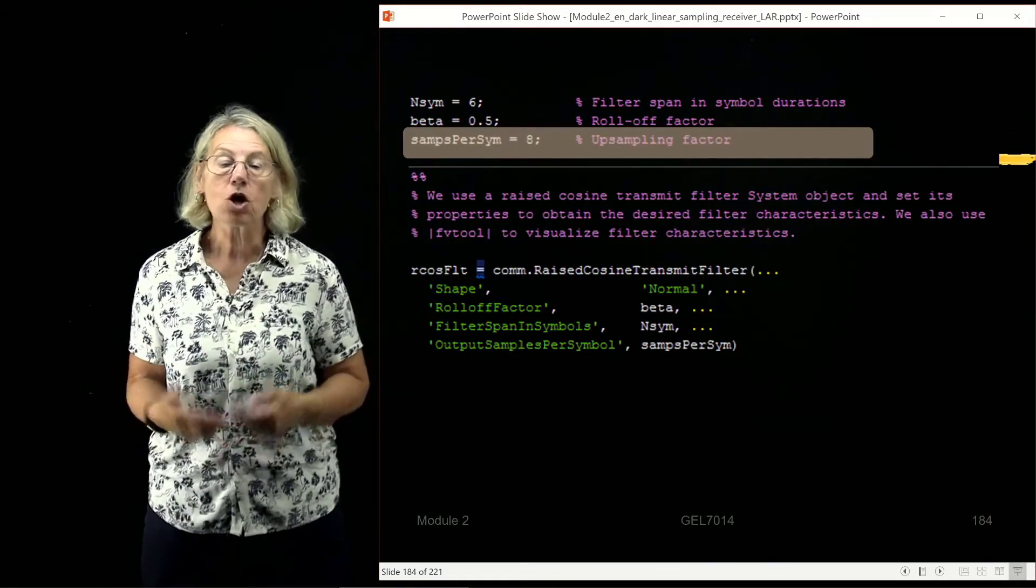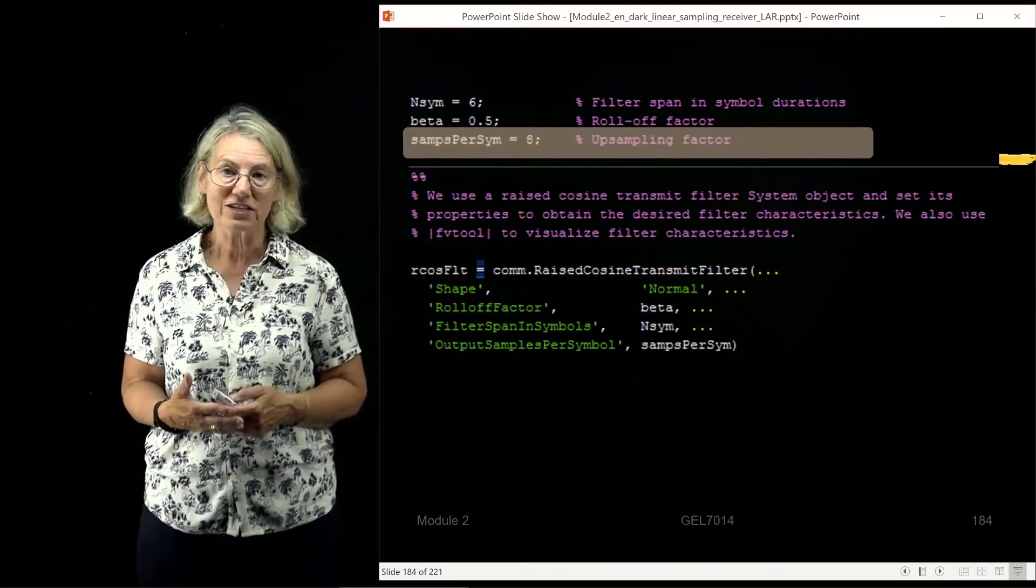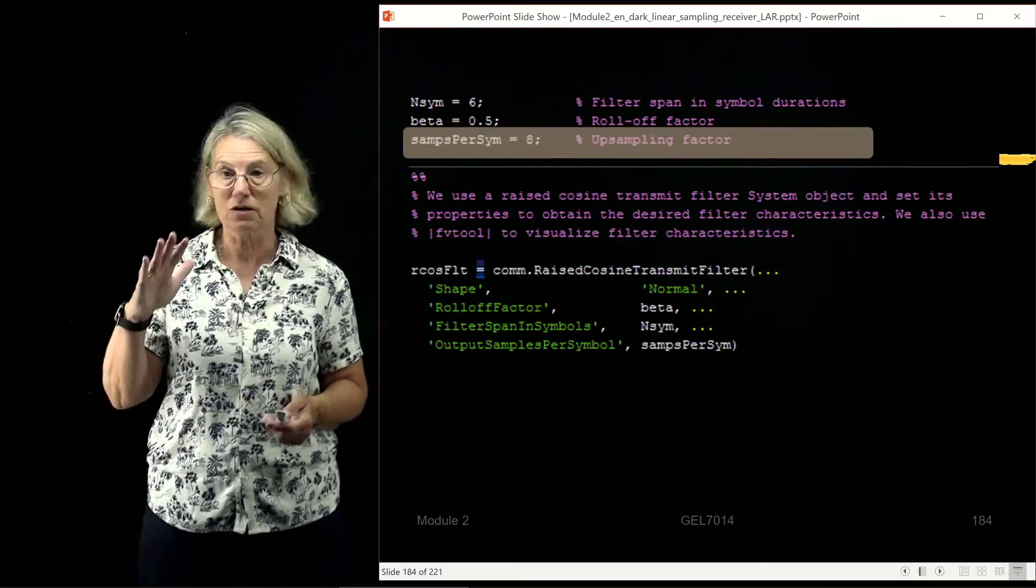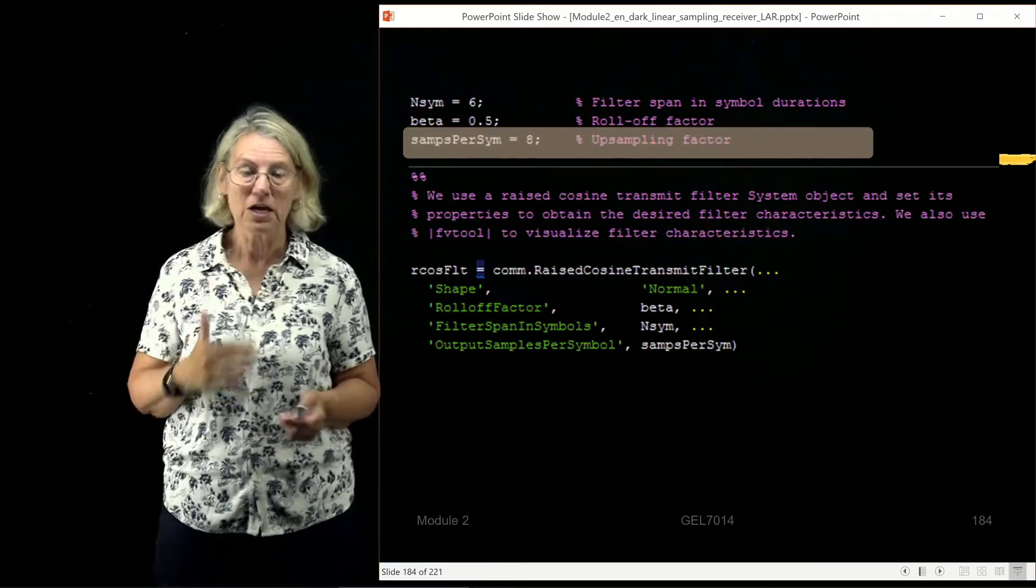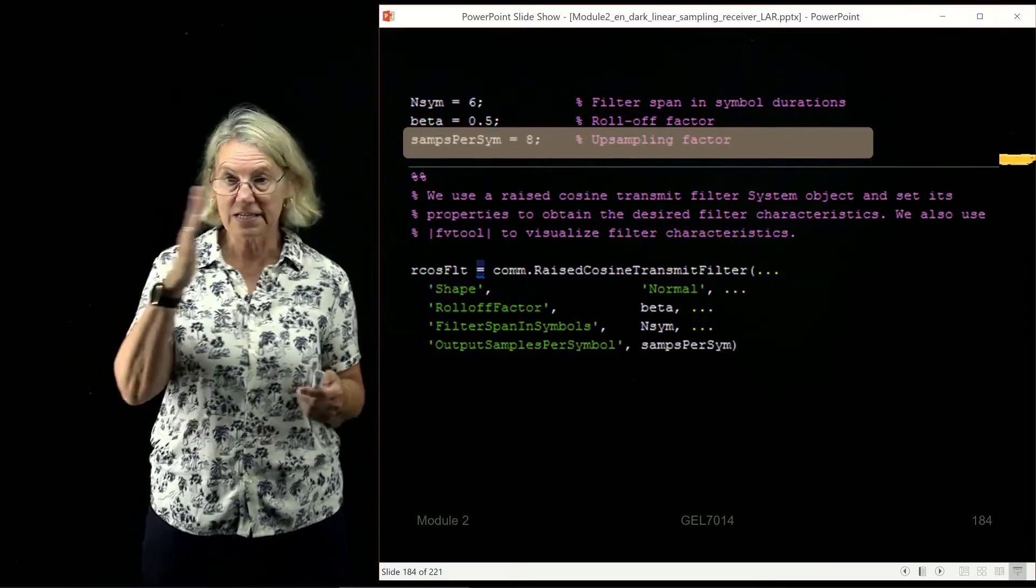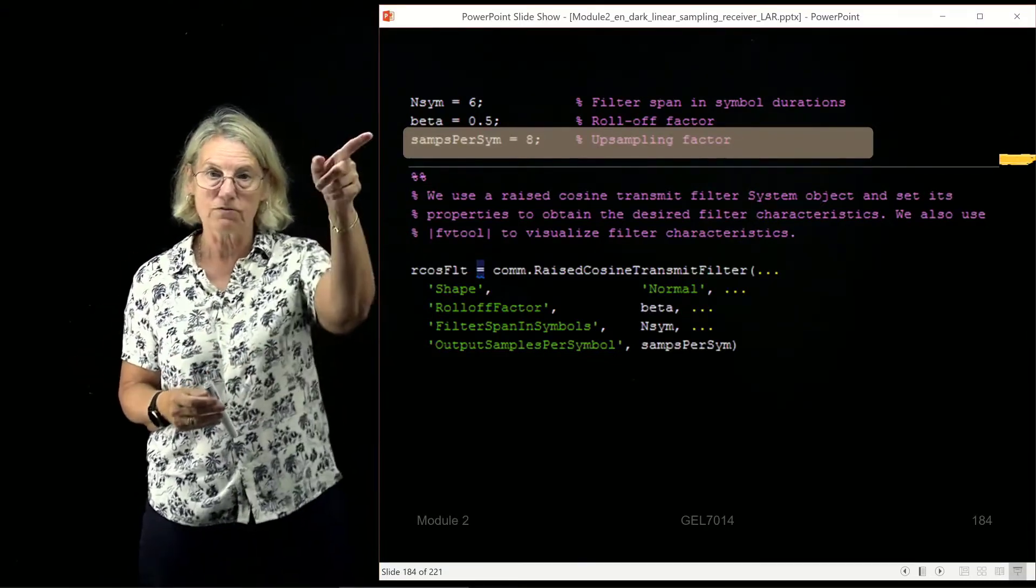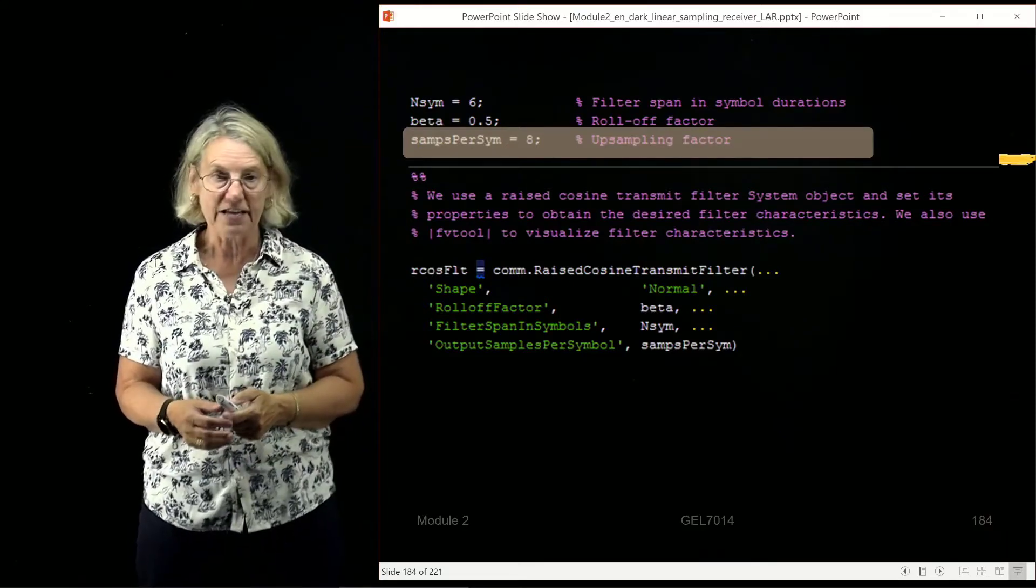So the next thing we have to specify is how much oversampling we're doing in order to actually achieve the shape of the curve. Because it's not continuous time in MATLAB, so it's not a continuous time curve. We have to specify how many samples we're going to do, and in this case the oversampling rate in this demonstration is eight.